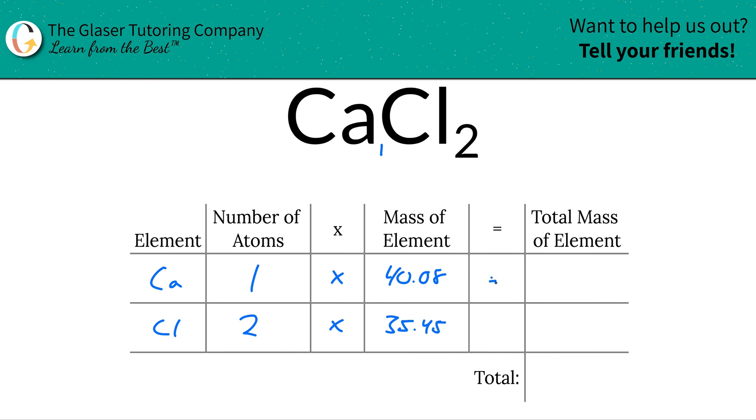And then to find the total mass of each element in the compound, we're simply going to multiply this row across. So for calcium, the total mass of calcium is 40.08. It works out to be the same as its molar mass because there's only one atom. However, for chlorine, it's going to be different. The total mass of chlorine here is going to be 70.90, and that's because there are two chlorines. So we took the two chlorine and multiplied by its mass.